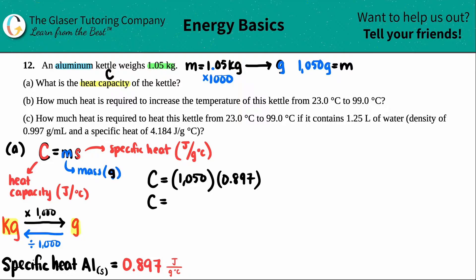For sig fig purposes, the lowest number I have is 3 sig figs, so I'll cut it off at 3 sig figs. That gives 942 joules per degree Celsius. So the heat capacity of the kettle is 942 joules per degree Celsius. That's letter A.